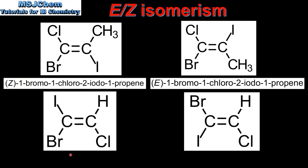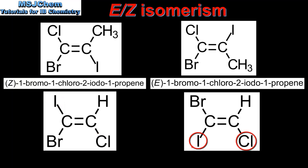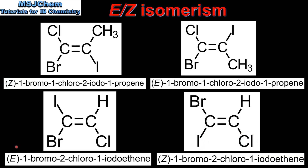Here we have our final example. In the isomer on the left, iodine has the highest priority on the left carbon atom of the double bond. On the right carbon atom, chlorine has the highest atomic number and therefore the highest priority. In the isomer on the right, both iodine and chlorine are on the same side of the carbon-to-carbon double bond. So the left isomer is E-1-bromo-2-chloro-1-iodo-ethene, and the isomer on the right is Z-1-bromo-2-chloro-1-iodo-ethene.